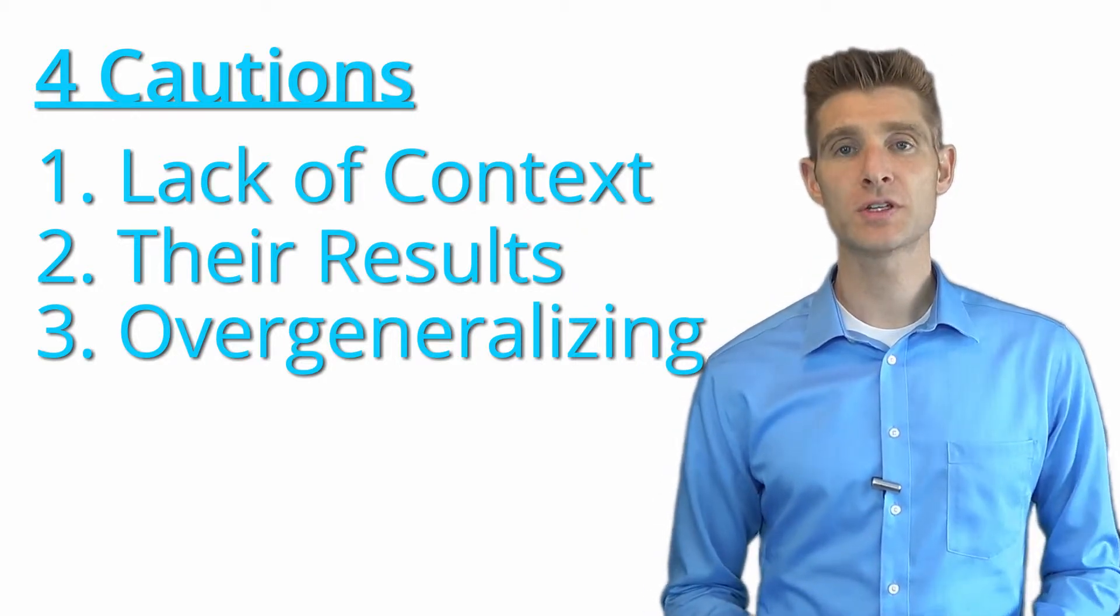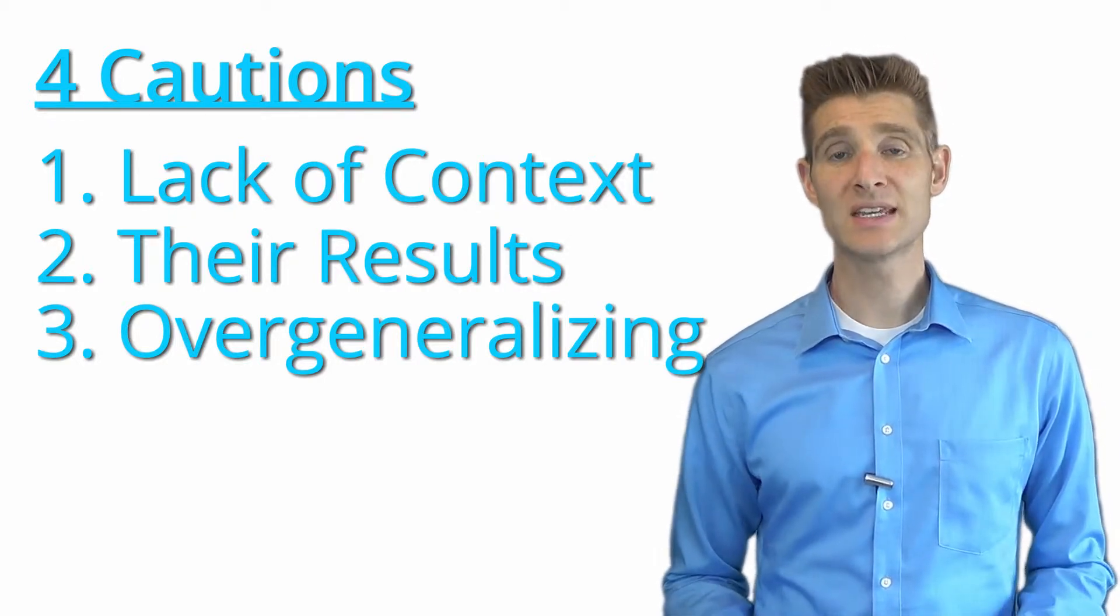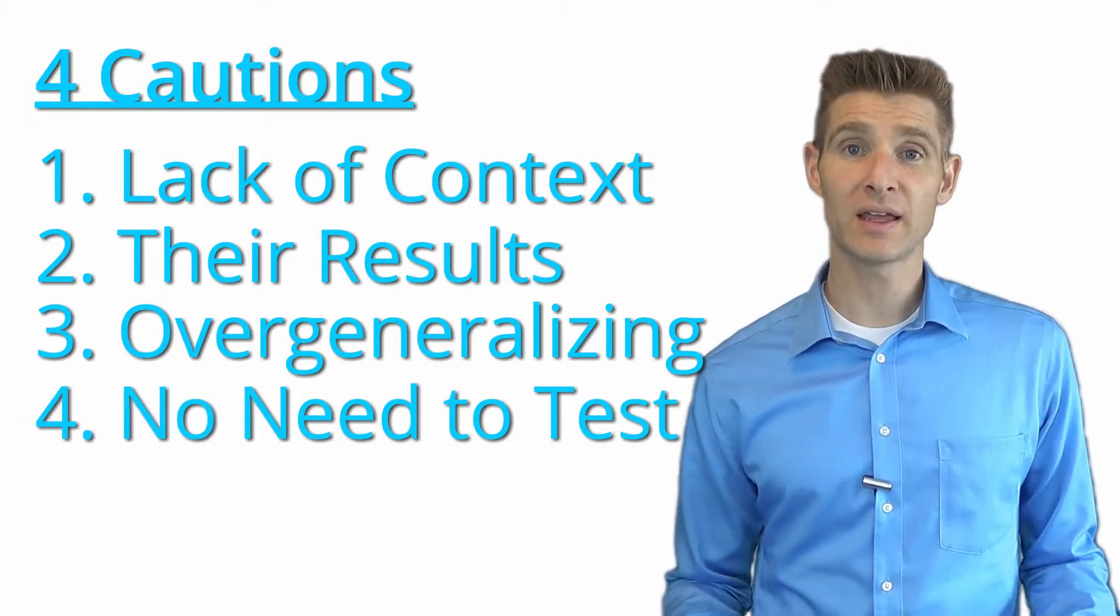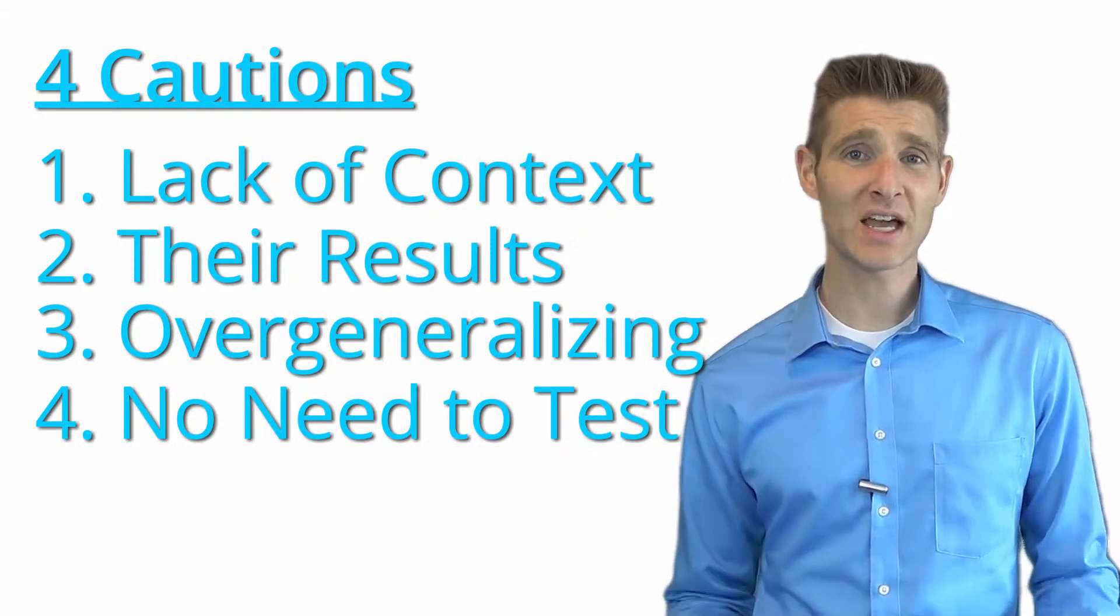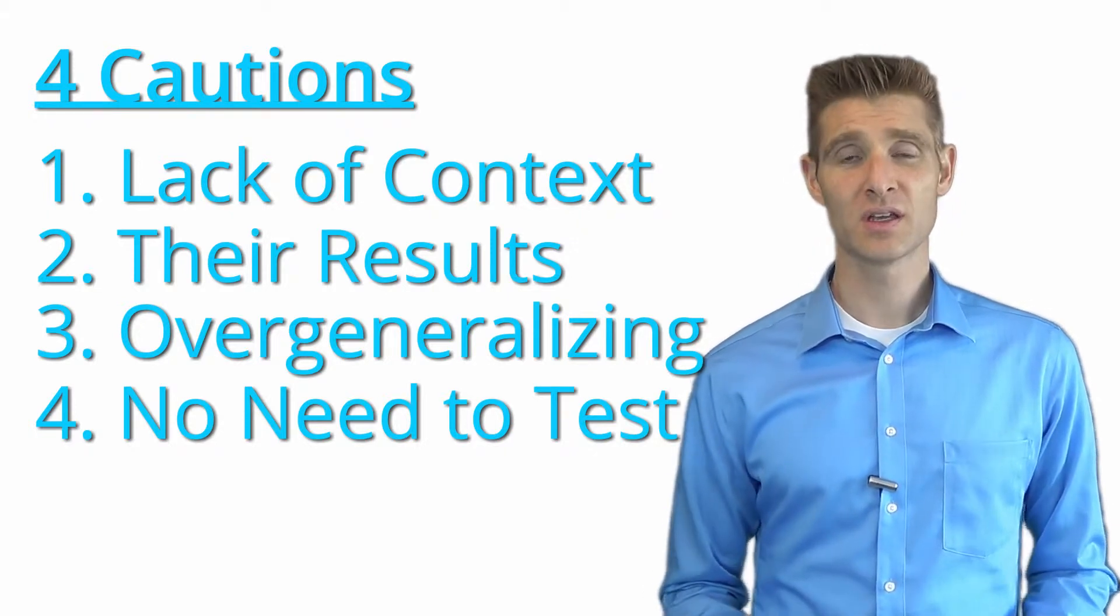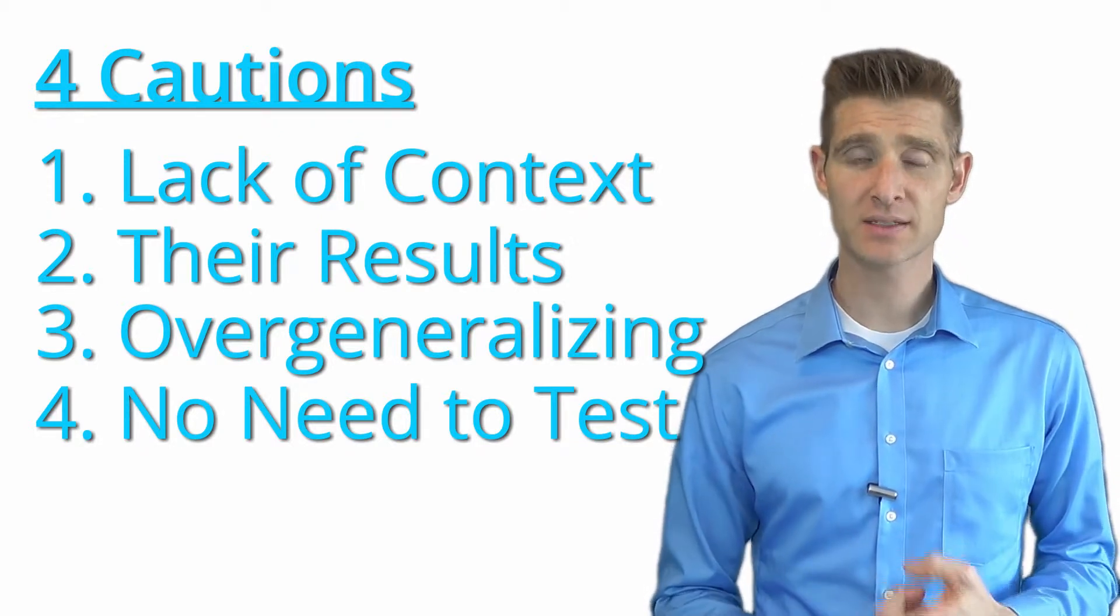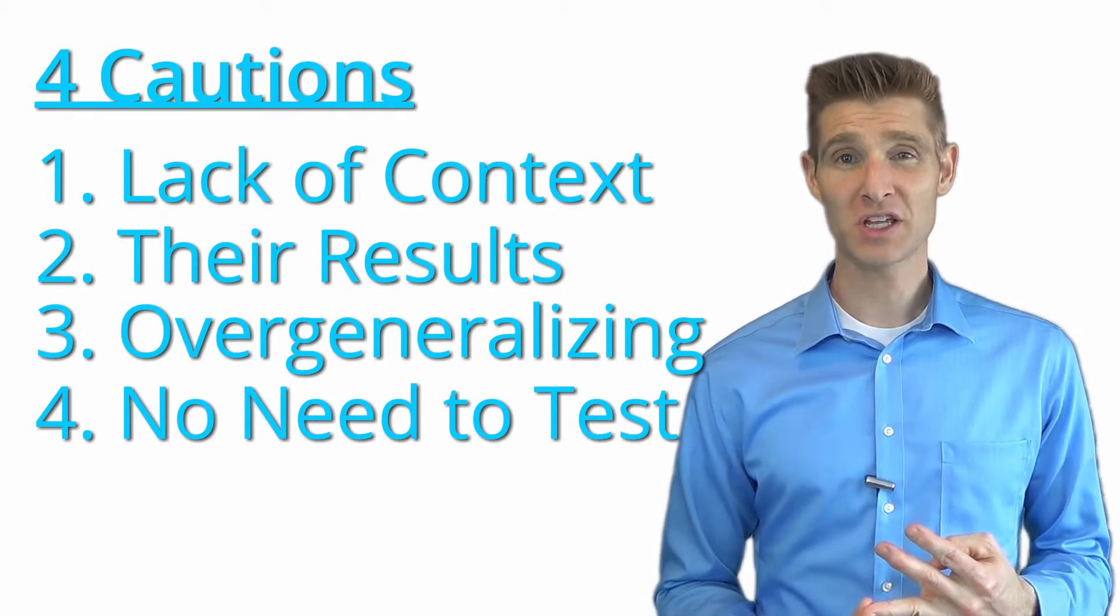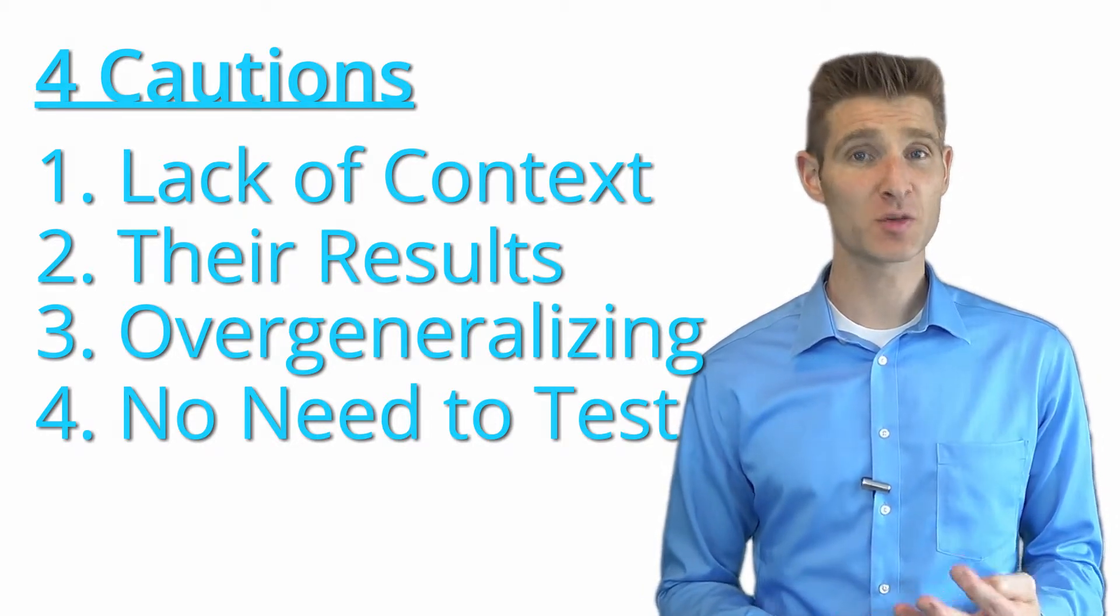The fourth and most dangerous reason why we need to be cautious about other people's test results is because often when we see test results or show them to other people, they get this mentality like 'Great, now we know the answer, now we don't even need to test it.' And so that mentality of 'We don't need to test it now that we know' is very dangerous. So those are the four reasons to be cautious of other people's test results. First, there's a lack of context. Second, their results are their results. Third, there's over-generalization, and fourth, people have a tendency to want to not test when they've seen other people's data.